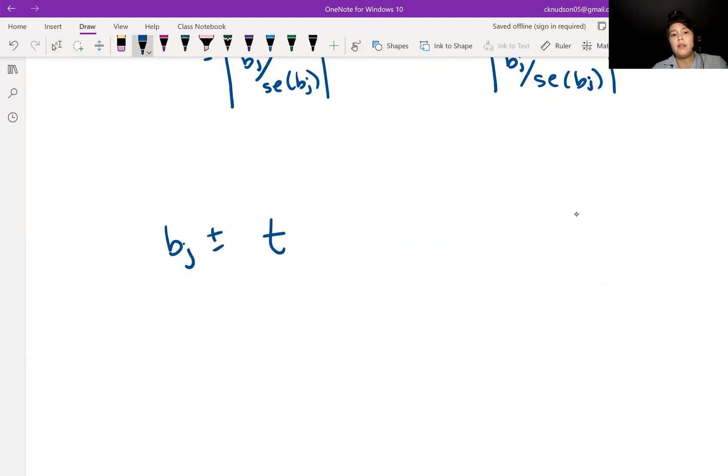Plus or minus a quantile from a T distribution with N minus K minus one degrees of freedom, with one minus alpha over two in each tail, multiplied by the standard error for beta J. This would be a one minus alpha confidence interval for beta J.